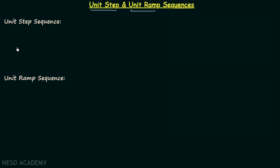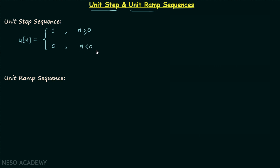Unit step sequence is represented by u[n]. It is equal to 1 for all values of n which are greater than zero, it is equal to 1 when n is equal to zero, and it is equal to zero for all values of n which are less than zero.